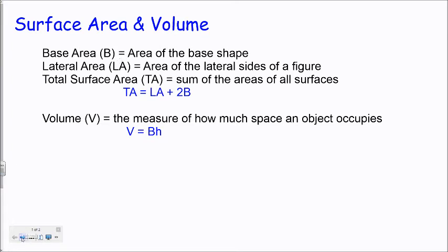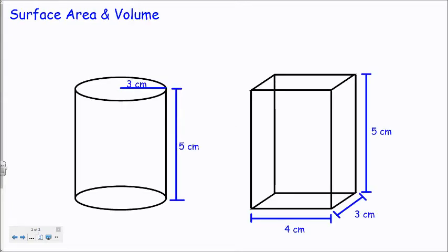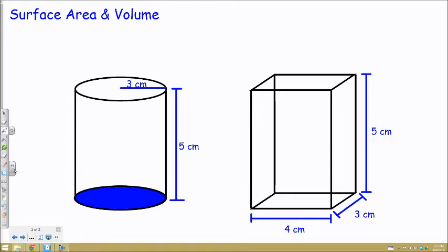So let's look at a couple of examples to remind us how to calculate these values. My first example is a cylinder, and I know it's a cylinder because its base is made up of a circle. Now, since the area of a circle is pi times the radius squared, I can find the area of this base using that formula.